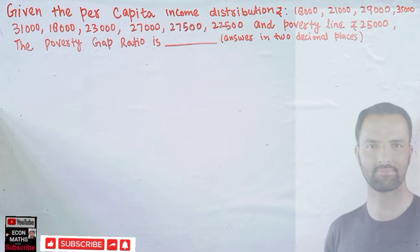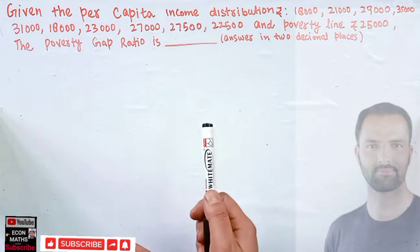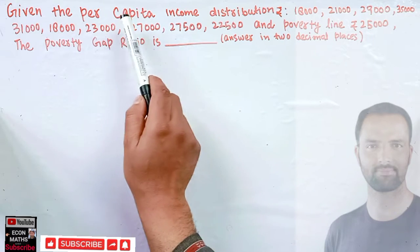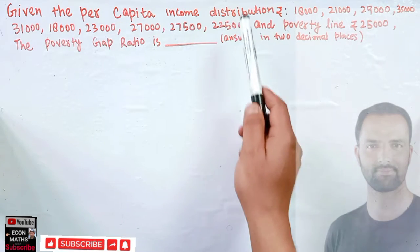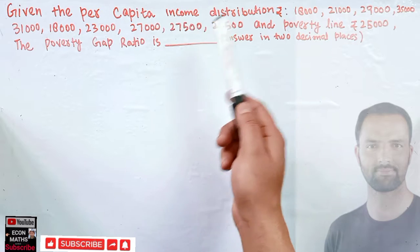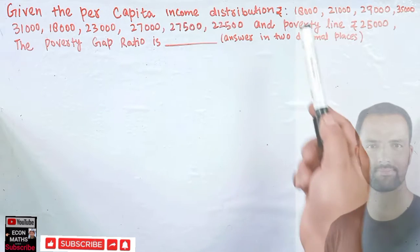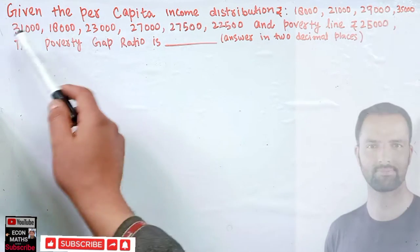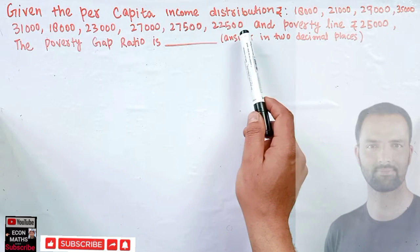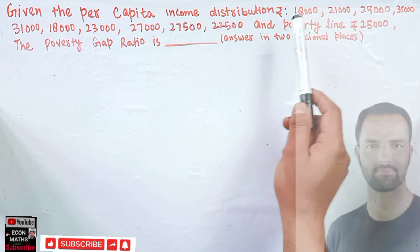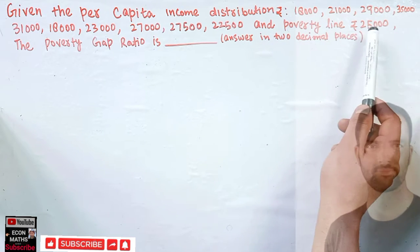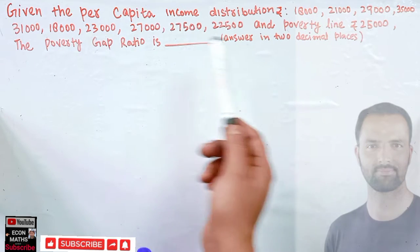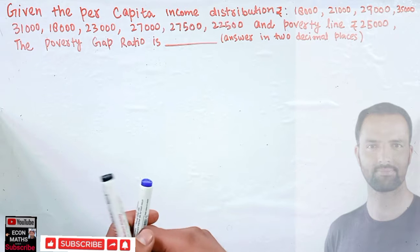In this video we will learn how to find the poverty gap ratio. We are given the per capita income distribution — the incomes of individuals as 18,000, 21,000, 29,000, and so on up to 22,500. The poverty line is given as 25,000. We have to find the poverty gap ratio and the answer should be in two decimal places.